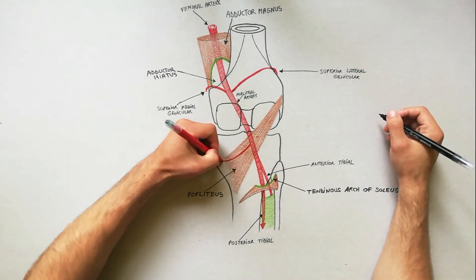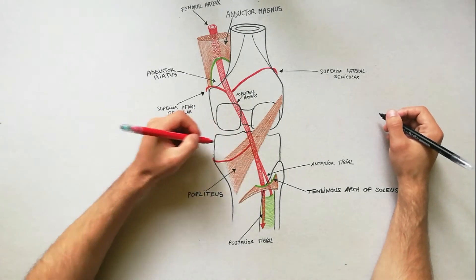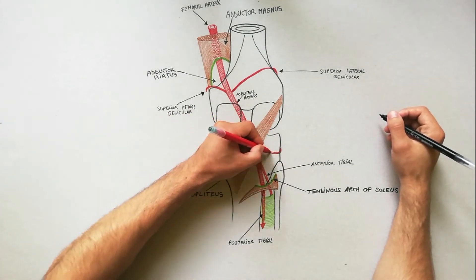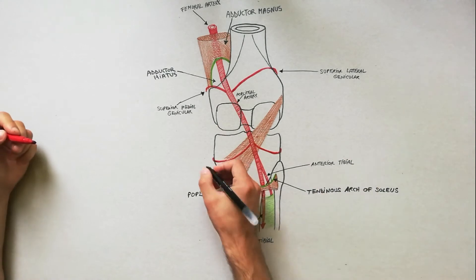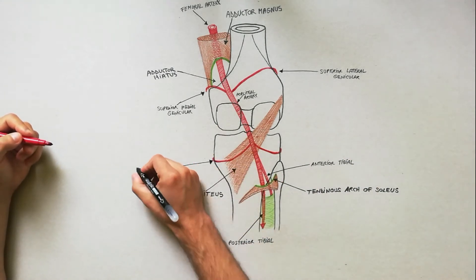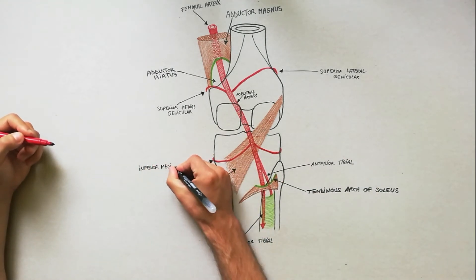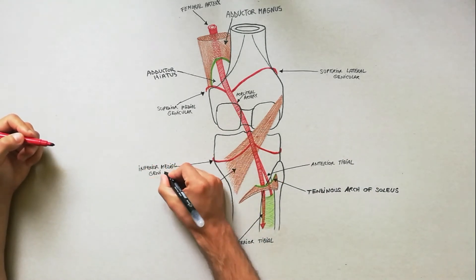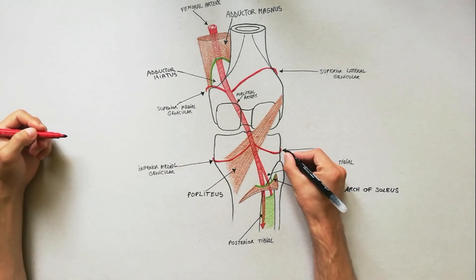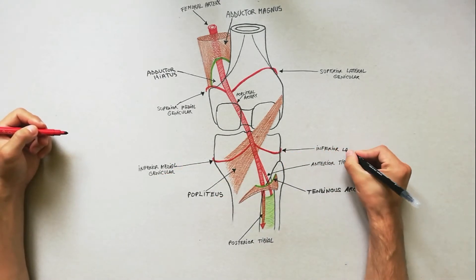The inferior medial and inferior lateral genicular arteries wind around the corresponding tibial condyles and pass deep to the corresponding collateral ligaments of the knee joint to take part in the formation of the genicular anastomosis.